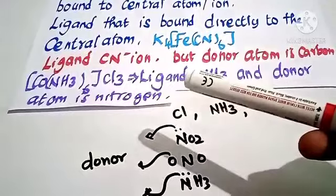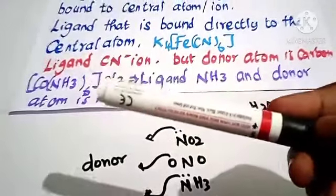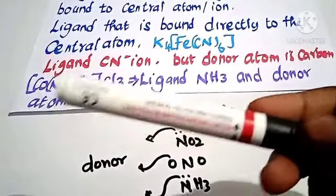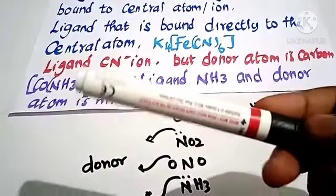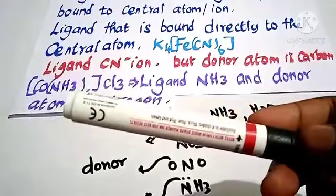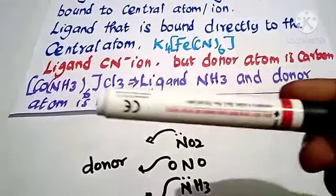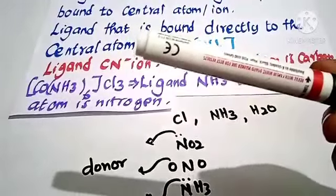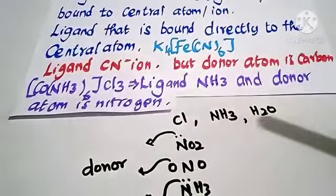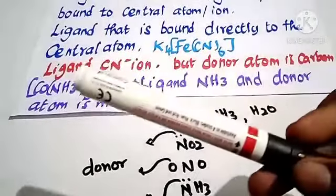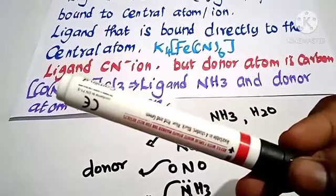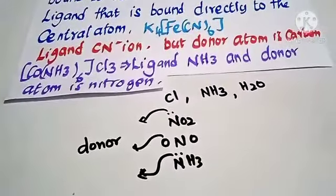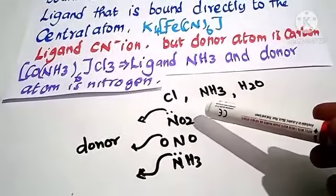Another example of a coordination compound is [Co(NH3)6]. Cobalt is the central metal atom. Ammonia is the ligand, directly bonded to cobalt. In ammonia, nitrogen is the donor atom — nitrogen donates an electron pair to cobalt.